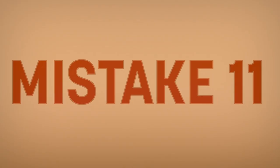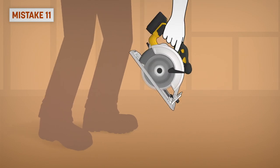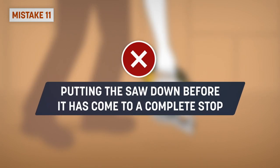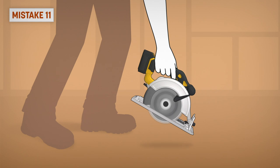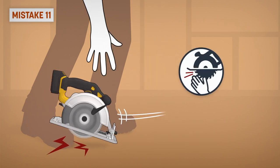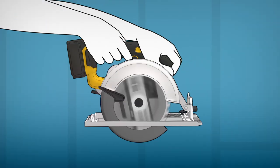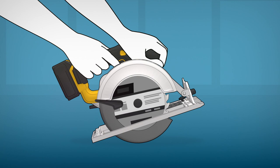Mistake 11: Putting the saw down before it has come to a complete stop. An unprotected coasting blade will cause the saw to walk backwards, cutting whatever is in its path. Always wait for the blade to stop moving and for the guard to be closed before putting the saw down.